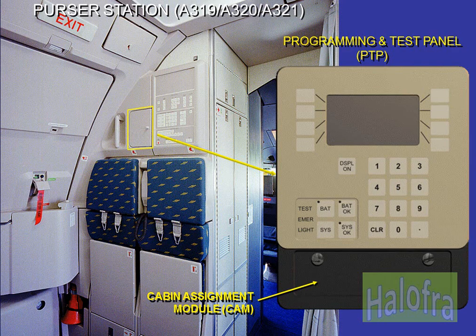The programming and test panel, PTP, is located next to the forward attendant panel, behind a hinged access door. It is equipped with a cabin assignment module, CAM, which contains all the software for specific customer layouts and defined parameters. The PTP informs the crew about the status of the cabin systems.